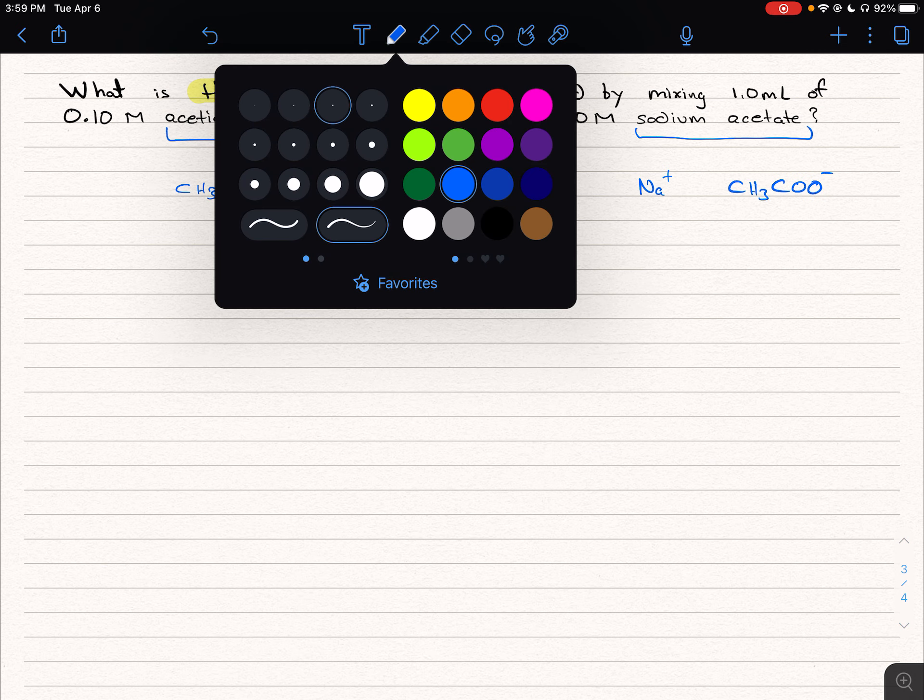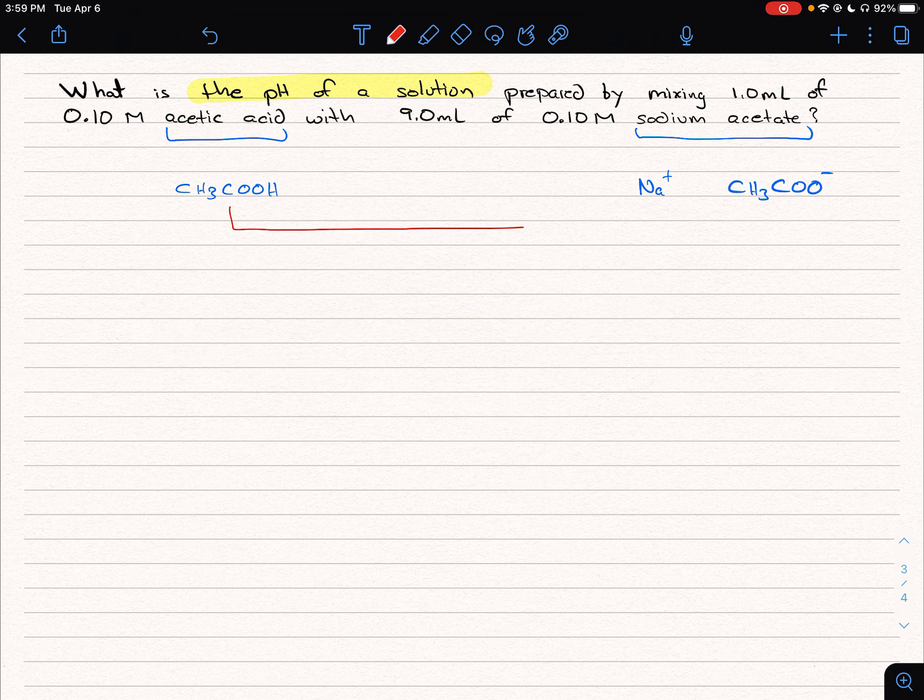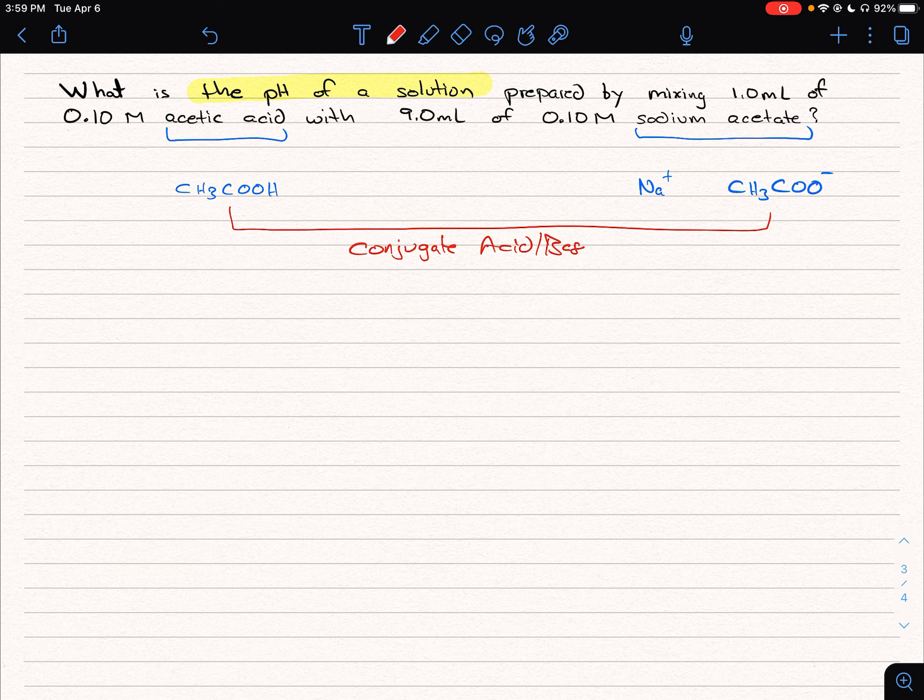What's important is these two molecules are conjugate acid-base pairs. The only difference between these two molecules is that here we have the proton, and in the case of acetate, the proton's gone. So they only differ by a proton.